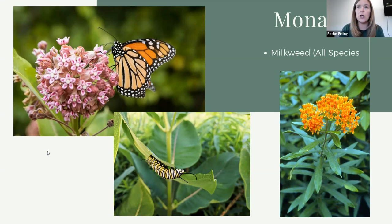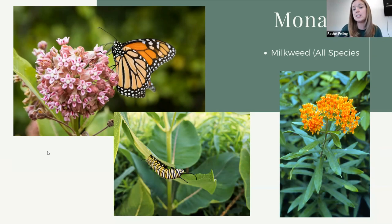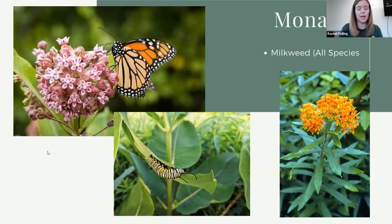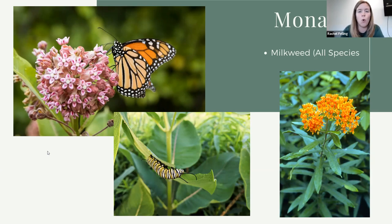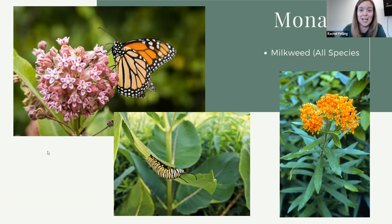The monarch is this iconic, beautiful orange and black butterfly. The caterpillar is black, yellow, and white and can get quite large — maybe about three inches when full grown. Caterpillars go through something called instars, which involves molting as they grow. Most species in their caterpillar or larval stage will go through a couple of instars before going to the pupa stage, where they form their chrysalis and turn into the adult butterfly. As they go through different instars, they may look different at different stages.